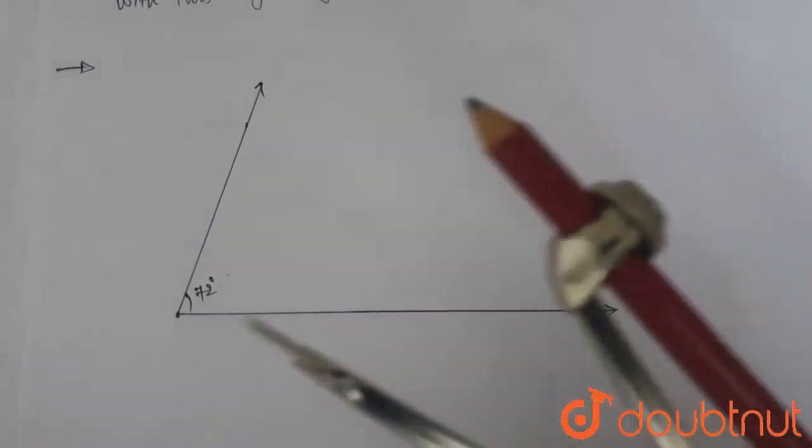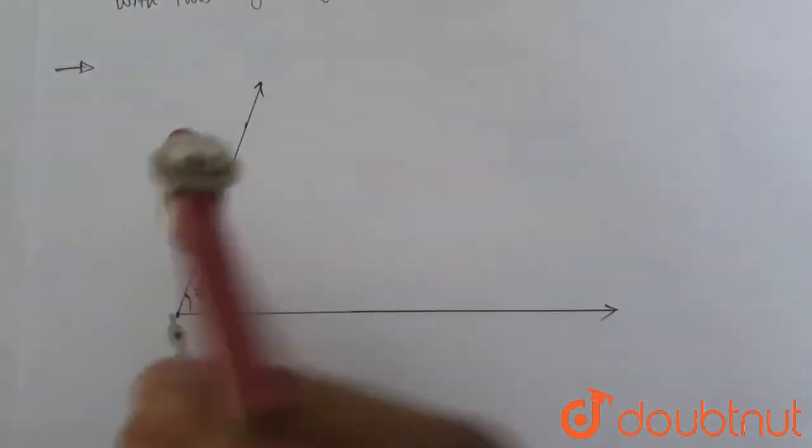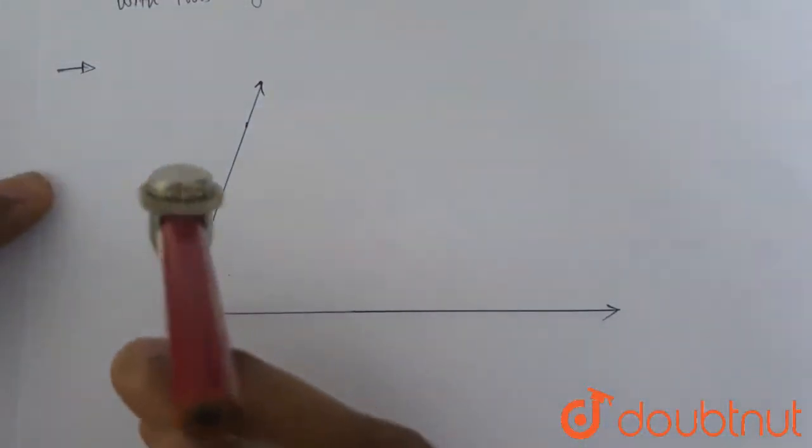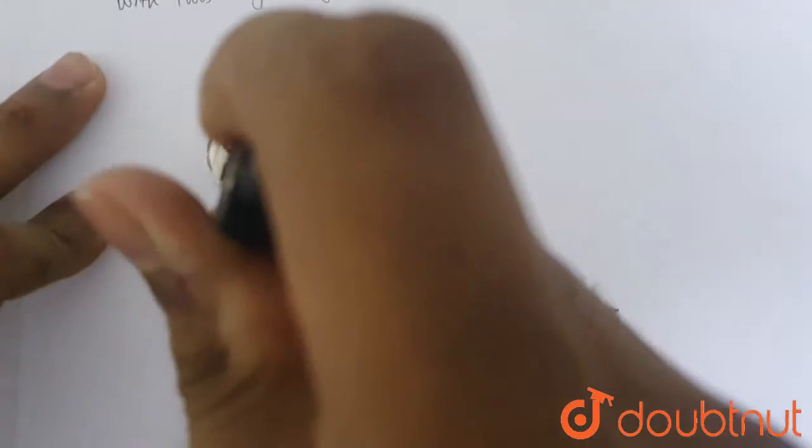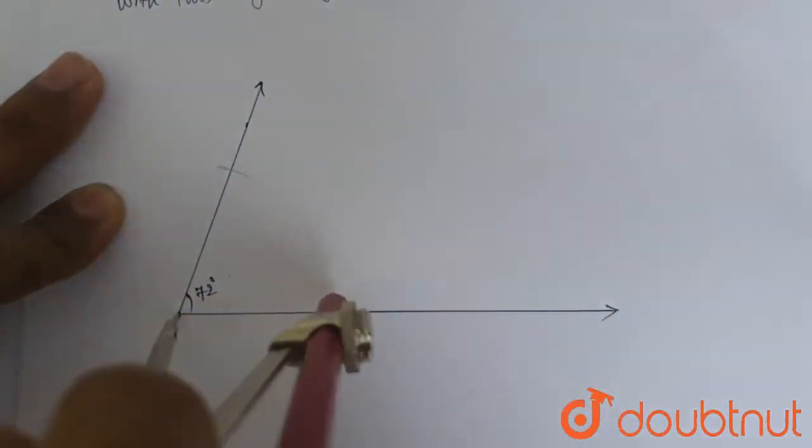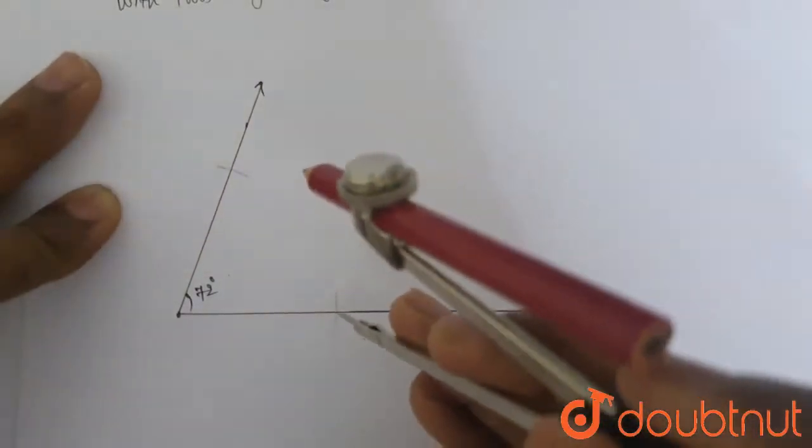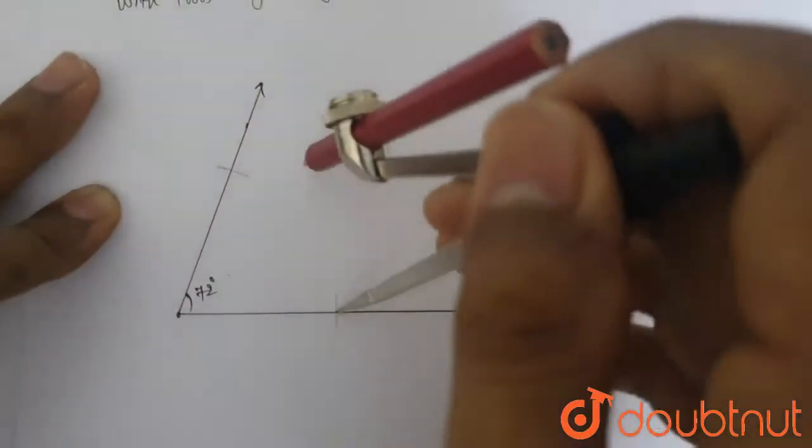We use a compass and we take a random distance on the compass and mark two arcs on both the arms of the angle. And from here we again mark two arcs.